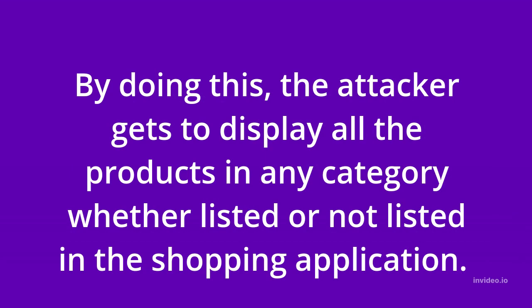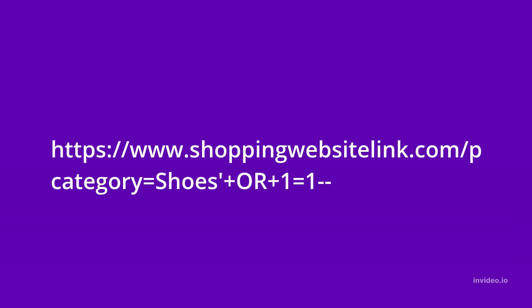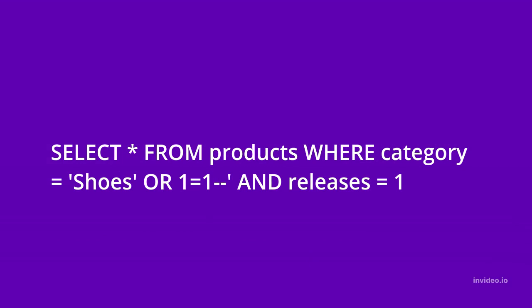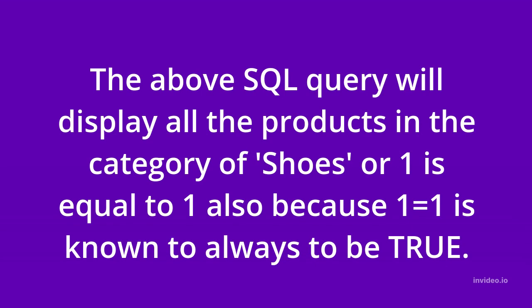This can be achieved using a link like the one below. The SQL query will display all the products where category equals shoes OR one equals one AND released equals one. Because one equals one is always true, the SQL query will return all the product items in the shopping application.